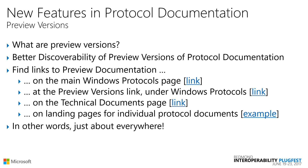Let's jump right into a tour of new features in our protocol documentation. The first is preview versions. Preview versions are essentially early versions of our protocol documents containing preliminary content that pertains to some upcoming product release — like a public beta or community technology preview or insiders program. Obviously it is subject to change. Preview versions themselves are not new; we've been doing this for a long time. What is new is that we've now located these preview versions closer to our actual technical specifications and done a lot of work to make them much more discoverable than they used to be.